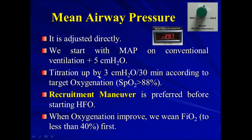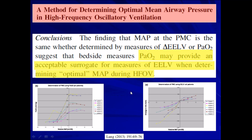For titration, increase by 3 cm of water every 30 minutes according to the target oxygenation. We should keep saturation more than 88%, as with all ARDS patients. We prefer to start with a recruitment maneuver when shifting the patient to high frequency. We can do the recruitment on the machine itself — stop the oscillation, give FiO2 of 100% and a mean airway pressure of 40, continue for 40 seconds while monitoring saturation more than 90% and stable heart rate and blood pressure. When oxygenation improves, we wean FiO2 first. When we reach 40% FiO2, we can start weaning the mean airway pressure.